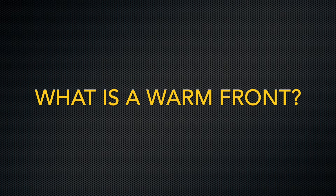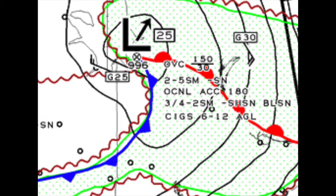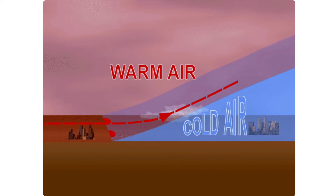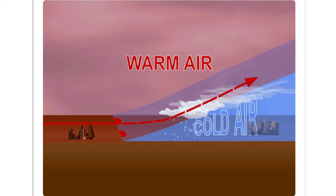Before we talk about the warm front in the winter, let's talk about what a warm front is in the first place. A warm front is a transitional mixing zone between two air masses. This transitional mixing zone is actually quite a few miles wide — it's not a thin line like you see on weather maps. Whenever you see a warm front on a weather map, it's a sign that the low pressure system is moving in. Another way to describe a warm front is that the cold air is retreating, or that the warm air is advancing on top of the cold air.